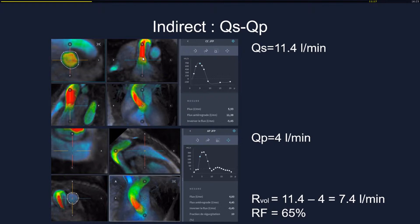In the second step, we calculate the systemic flow, placed below the aortic valve in the laminar flow zone, reading 11.4 liters per minute. Then we do the same for pulmonary flow, which reads 4.0 liters per minute. The difference is 7.4, which is very close to the direct measurement. By the law of mass conservation, we can be almost certain the number is correct.